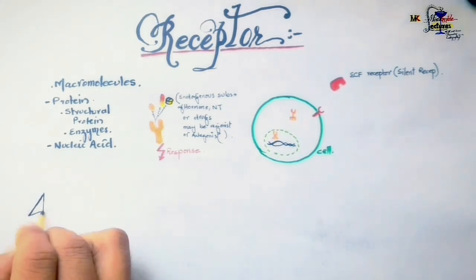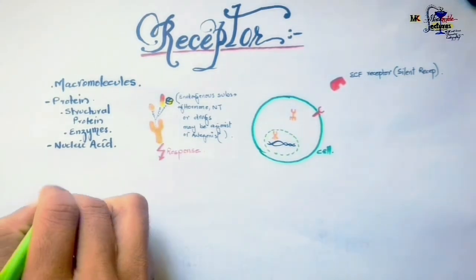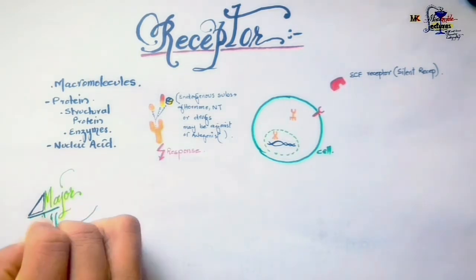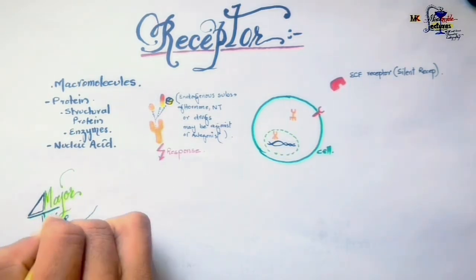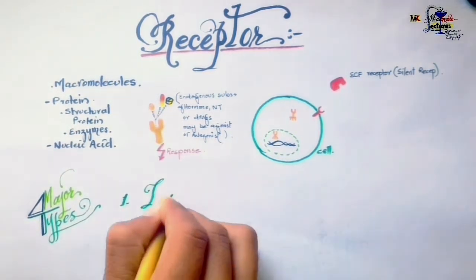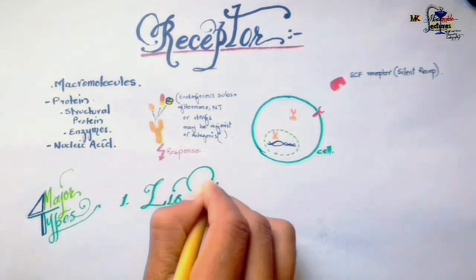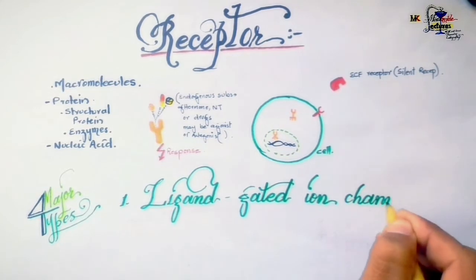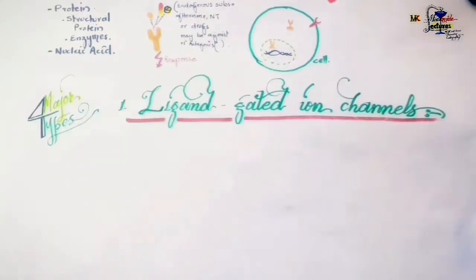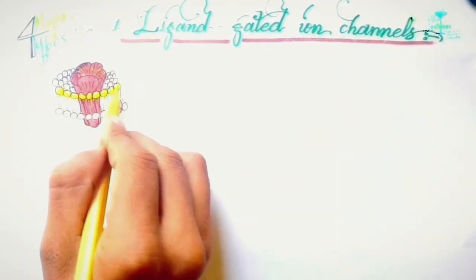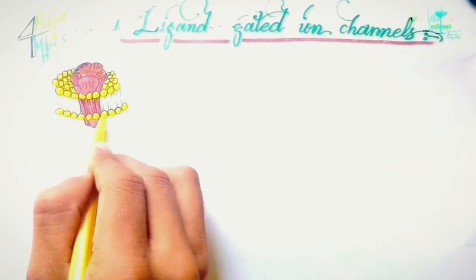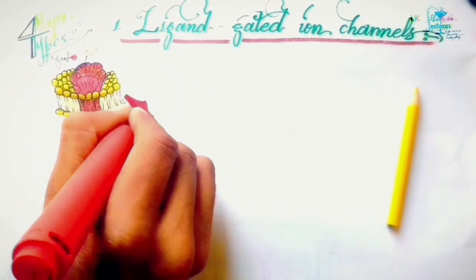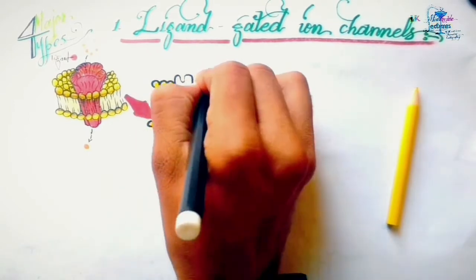Receptors are mainly divided into four major classes: ligand-gated ion channels, enzyme-linked receptors, GPCRs, and intracellular receptors. Ligand-gated ion channels are types of channels directly linked with receptors, mostly present in the cell membrane, which allow ions to be transported across the cell membrane upon binding of a ligand to the receptor.